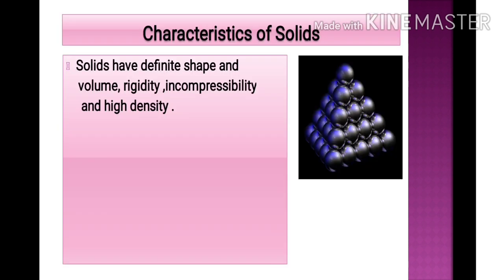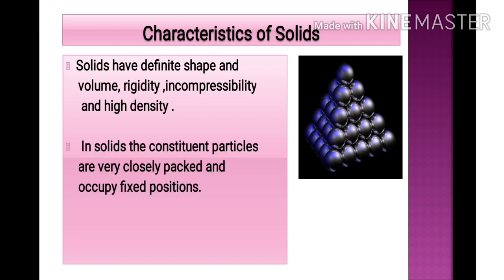Solids have definite shape and definite volume — their shape and volume are fixed. They are rigid, incompressible, and the density of solids is very high. The constituent particles are very closely packed and occupy fixed positions, meaning solid particles cannot move from one position to another; they can only vibrate around their positions.